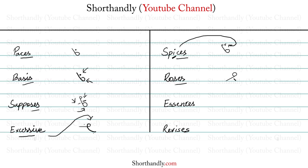The next word is ESSENCES. ESSENCES will be written like this. We have a vowel here to represent our E vowel, then we have this S, then again an E vowel to represent our E sound, then we have the N, and then simply the large circle which represents the SES. And that's our word ESSENCES.